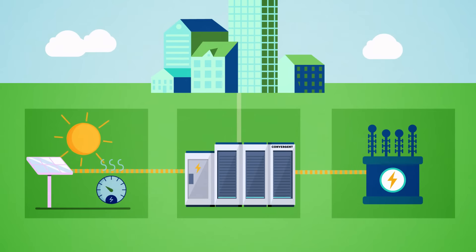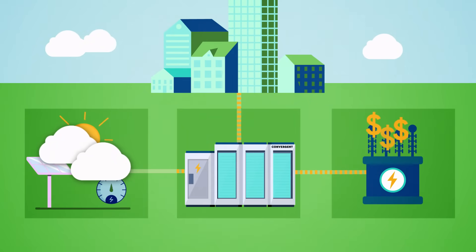Energy storage systems allow electricity to be stored and then discharged at the most strategic times. Battery energy storage systems can be charged with electricity from the grid or from on-site renewable generation, stored and discharged when there is a deficit in supply or when energy is most expensive.